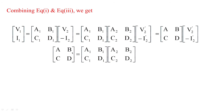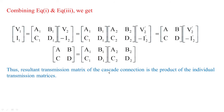So the overall ABCD matrix equals the matrix [A1, B1; C1, D1] multiplied by [A2, B2; C2, D2]. This type of connection — equations under transmission lines — is framed as a cascade connection. Thus, the resultant transmission matrix of the cascade connection is the product of the individual transmission matrices.